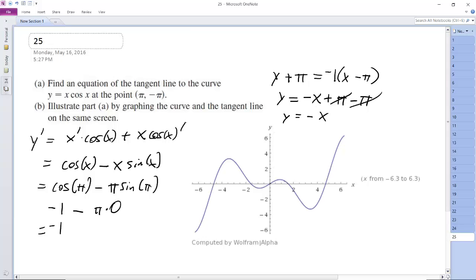So π is roughly 3.14, so π is right about here. So we get π, -π. So it's roughly supposed to be something like this. And based on how the graphs scale, that's about right. So there's the tangent line.